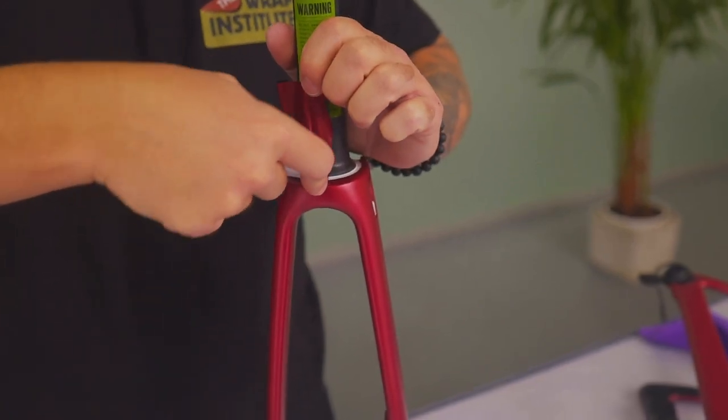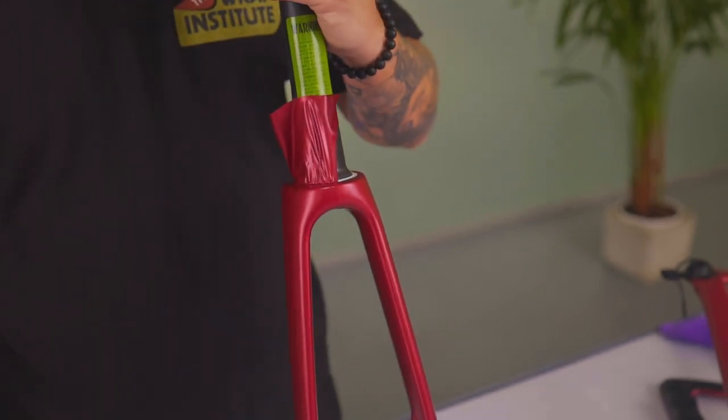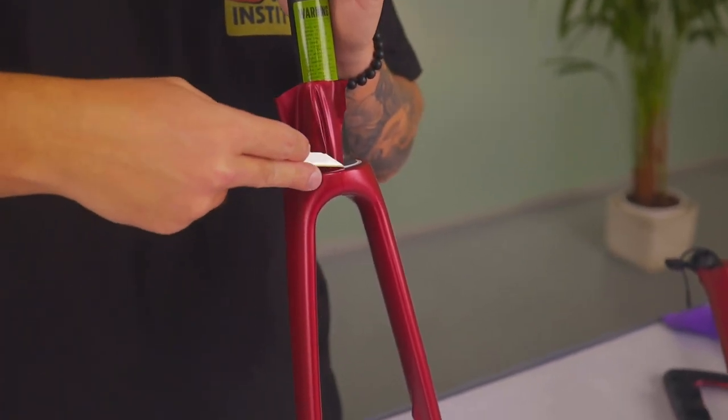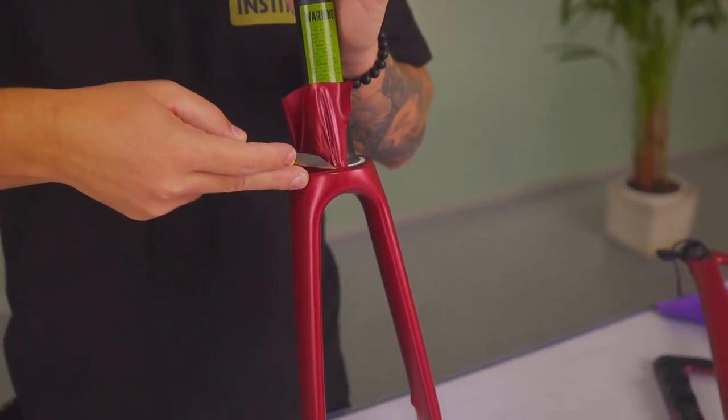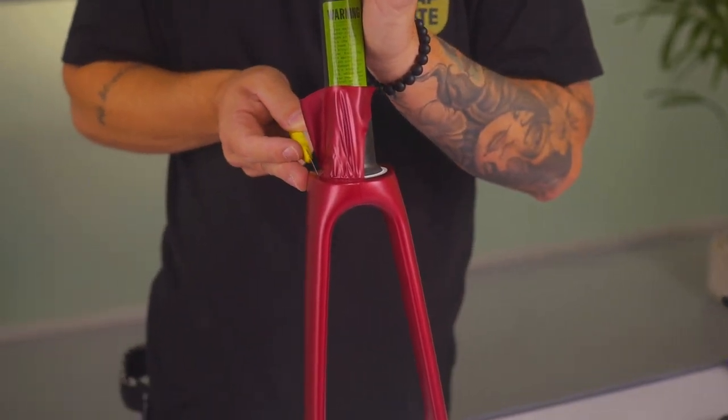Once everything's cut out on the bottom section, stand the fork up then tuck the material into the top. Make sure it's nice and secure on all levels, then take the tip of the blade into the base and make a uniform cut.